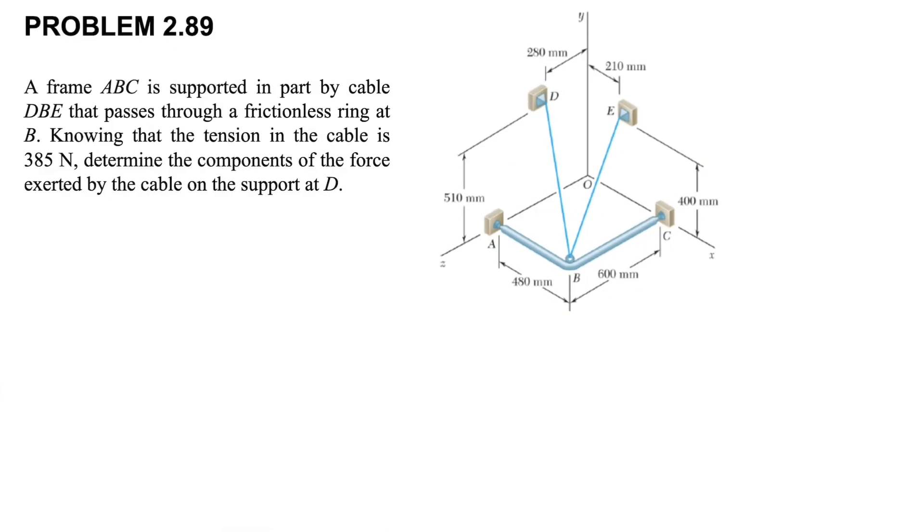Welcome back. In this question we have a frame ABC that is supported in part by cable DBE that passes through a frictionless ring at point B. Knowing that the tension in the cable is 385 Newtons, we need to determine the components of the force exerted by the cable on the support D.